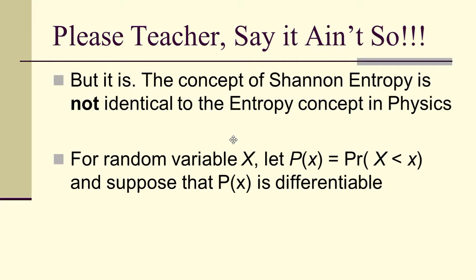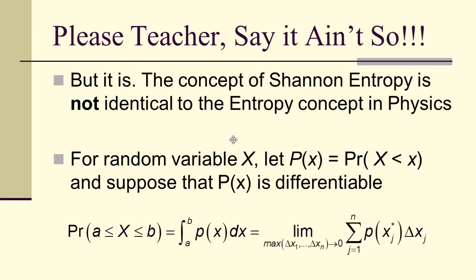To see this, let's suppose that for random variable x, we let P of x be the probability that capital X is less than little x, and let's suppose that P of x is differentiable — actually, all we need is absolutely continuous with respect to some measure. If we want to find the probability, we can use the derivative, little p of x, which is the probability density function. The probability that A ≤ x ≤ B is the integral from A to B of p(x) dx, which is the limit as the norm of the largest delta x goes to zero of the Riemann sum p(x_j) × delta x_j.